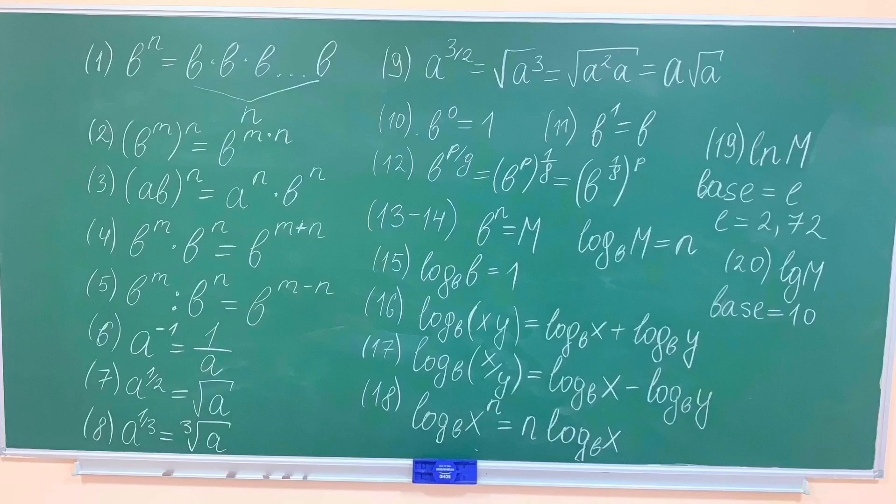In the first formula, B is a digit, n is the number of how many times we multiply the digit by itself. I ask you to carefully consider all the formulas, and we move on to examples.